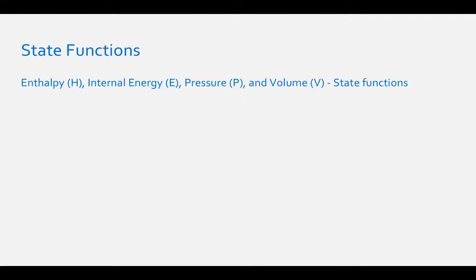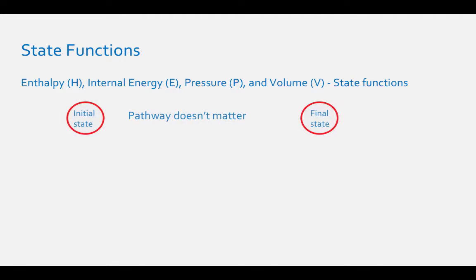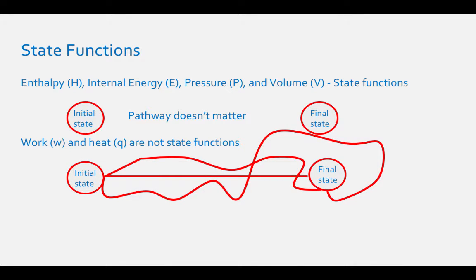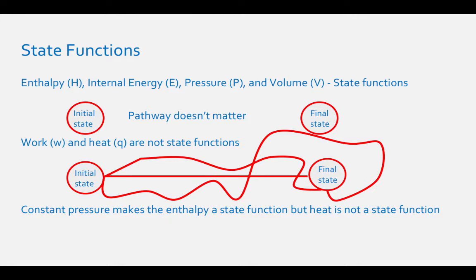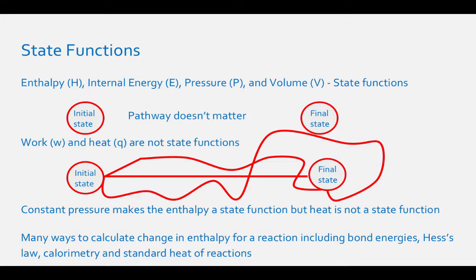Enthalpy, internal energy, pressure, volume, and temperature are all state functions. This can be determined because all the variables used to describe these quantities are capital letters. A state function only depends on starting or ending states — it does not matter the path it takes to get there. Work and heat are not state functions, meaning the path does matter to calculate these quantities, indicated by lowercase letters w and q. Even though heat is related to enthalpy, it is the constant pressure that makes enthalpy a state function, whereas heat is not. Since enthalpy is a state function, there are many ways to calculate delta H, including bond energies, Hess's law, calorimetry, and standard heat of reactions.